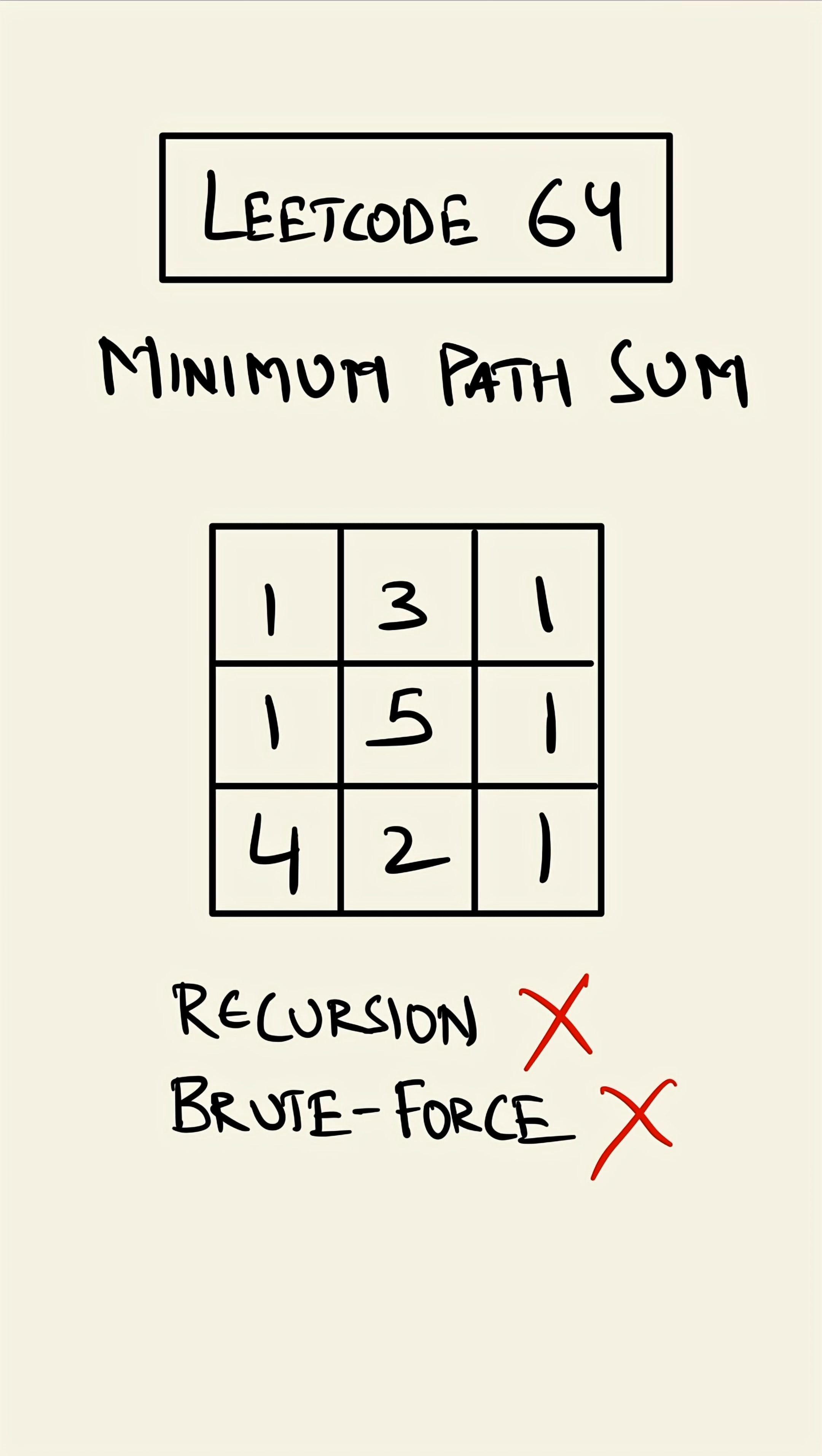No recursion, no brute force, but we will still solve this question. Welcome back to the coding interview series. This is LeetCode 64 Minimum Path Sum. In this question we are given a grid of m cross n.